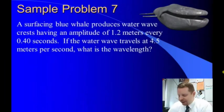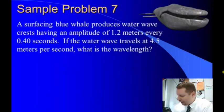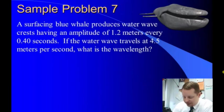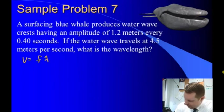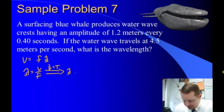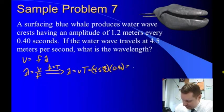The surfacing blue whale produces water wave crests having an amplitude of 1.2 meters every 0.4 seconds. If the water wave travels at 4.5 meters per second, what is the wavelength? We know the velocity of the wave and the period of the wave is 0.4 seconds, and we're looking for wavelength. Since one over frequency equals period, we can say wavelength equals velocity times period, or 4.5 meters per second times our period of 0.4 seconds, giving us a wavelength of 1.8 meters.